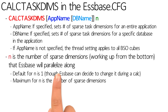The maximum you can set for N is the number of sparse dimensions in your outline, but don't worry terribly if you go over. Maybe you just like setting N to 200 — it's actually smart enough to drop 200 back to however many sparse dimensions you actually have.